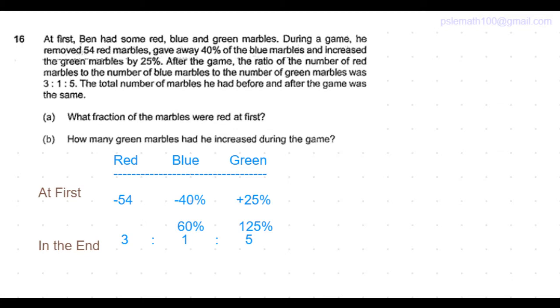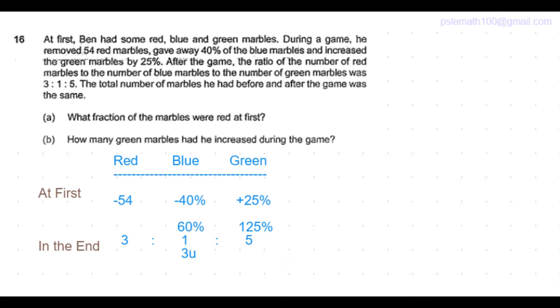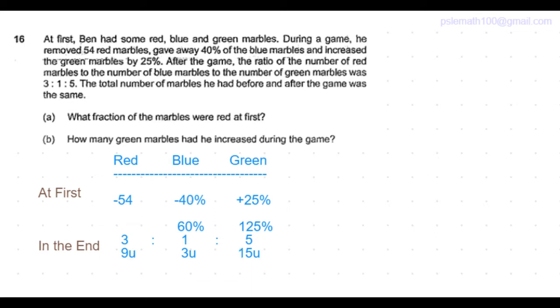the ratio of red to blue to green marbles were 3:1:5. We know the number of blue marbles is 60% of its original number, which means it is 3/5 of the original number. So let's take that as 3 units. So correspondingly, the red marbles would be 9 units and green marbles would be 15 units.